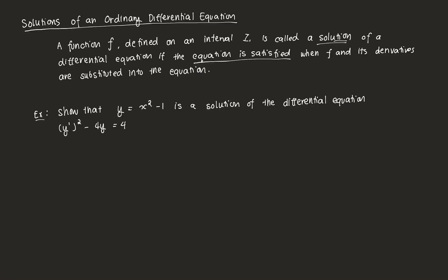We're asked to show that this function f — y = x² - 1 — is a solution to the differential equation y'² - 4y = 4. So we have our ODE: y'² - 4y = 4. What we're going to do is plug in the value of y and its derivatives into this equation and see if it holds.